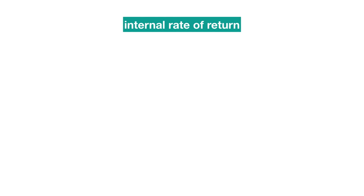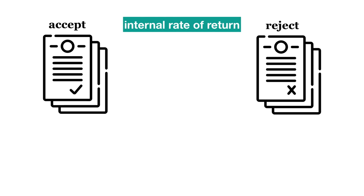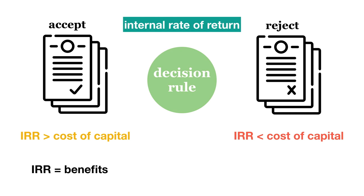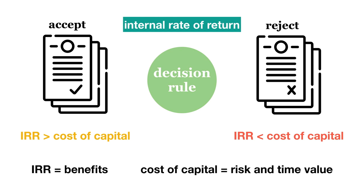The internal rate of return is often used to determine whether or not a firm should accept or reject an investment project. There is a general decision rule that can be followed: accept an investment project if the IRR is higher than the firm's cost of capital; reject an investment project if the IRR is lower than the firm's cost of capital. Because the IRR is a percentage that represents the benefits of the project, while the project's cost of capital is the appropriate discount rate that captures the risk and time value of the project, comparing the IRR to the cost of capital will tell us whether the benefits of the project outweigh the costs.